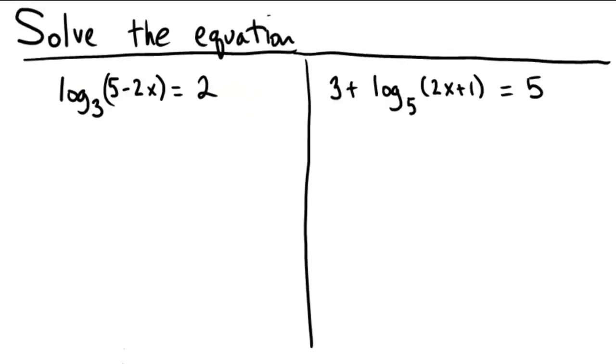Let's solve the following logarithmic equations. First one we have log base 3 of the quantity 5 minus 2x is equal to 2. I'm going to cancel out the logarithm base 3 by putting a 3 as the base of an exponential on both sides. This has the ability to cross out the logarithm and leave us with 5 minus 2x on the left and on the right we have 3 to the power of 2, 3 squared.